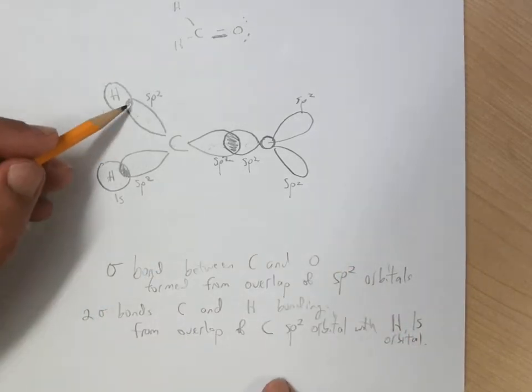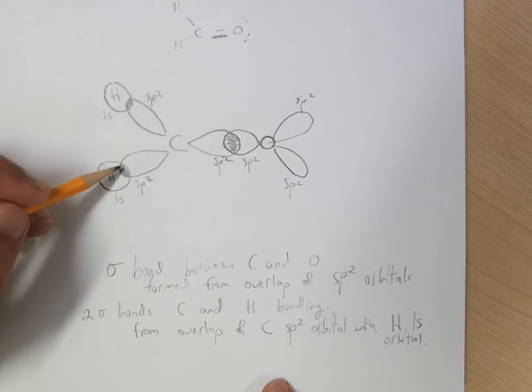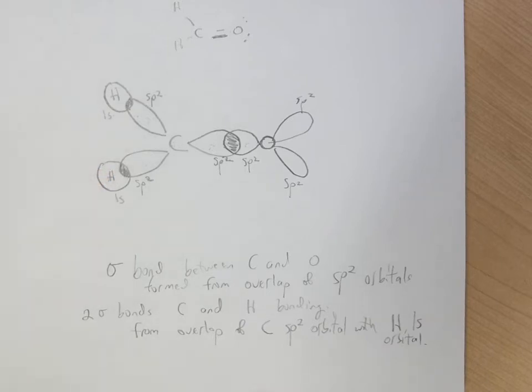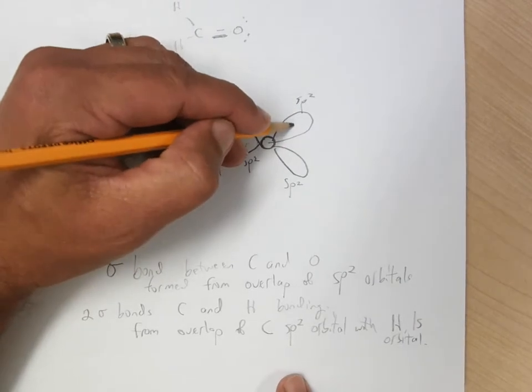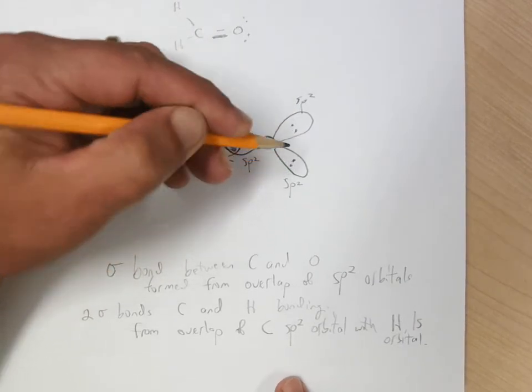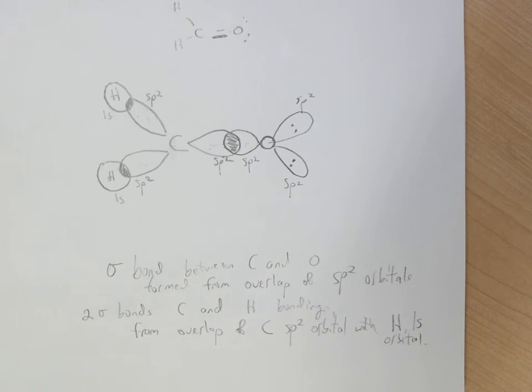So you can see that where the orbital overlap leads to bonds. And then the oxygen has these two lone pairs, and those will sit in the SP2 hybrid orbitals.